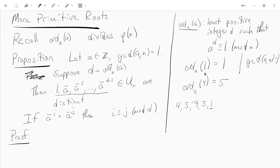For example, the order of 1 mod n is always going to be 1. And we saw in class that the order of 4 mod 11 was 5. And the reason is if you just compute the powers of 4 mod 11, you have 4 and 4 squared is 16, which is 5. 4 cubed is 4 times 5, which is 9 mod 11. 4 to the 4th is 4 times 9, which is 36, which is 3 mod 11. And 4 to the 5th is 3 times 4, which is 12, which is 1 mod 11.